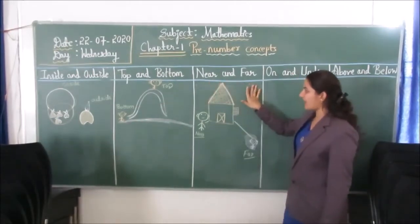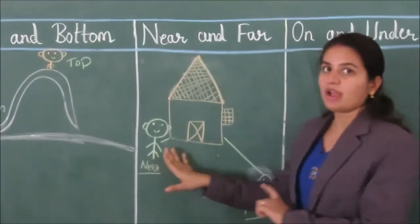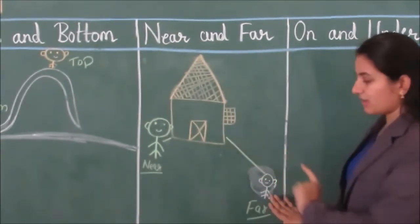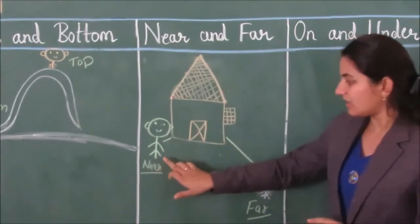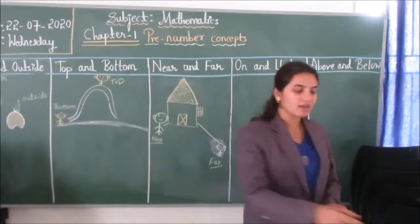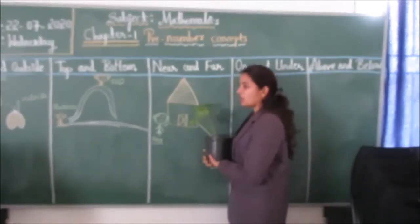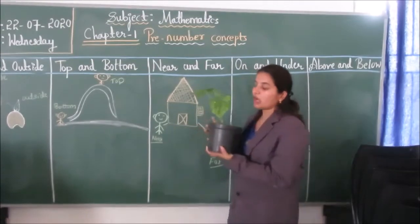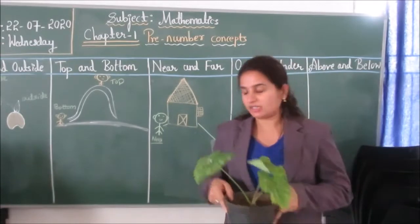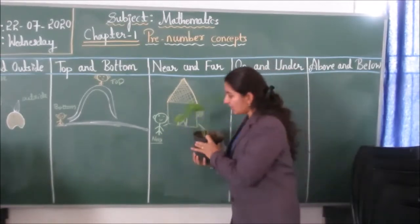Let us take the next concept: near and far. See children, your home is there. You are standing near your home and your friend is standing far away from the home. Let us take another example. The boat is near the port. Now, the boat moves a little away from the port — near and far.